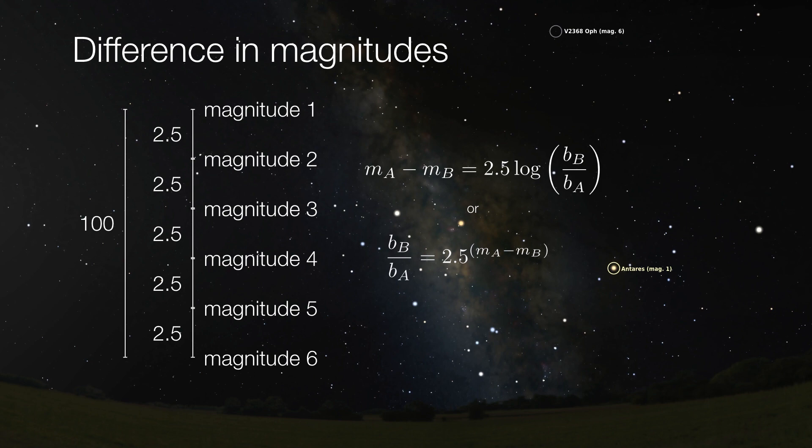So we can express this using a logarithm, which is the difference between any two magnitudes is equal to 2.5 times the logarithm of the ratio of the two brightnesses. Now that might seem a little bit weird to get your head around, but just remember, the logarithm is the exponent.